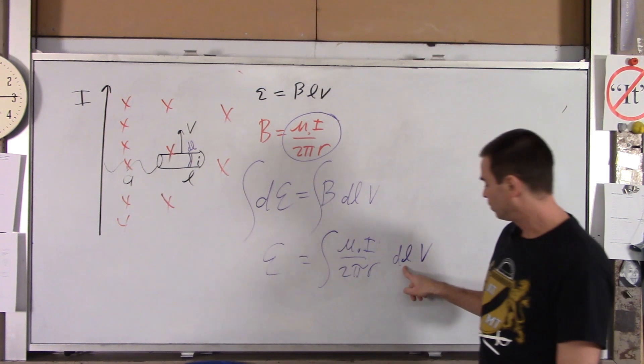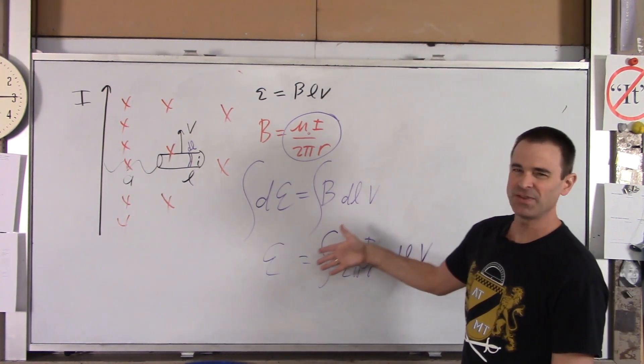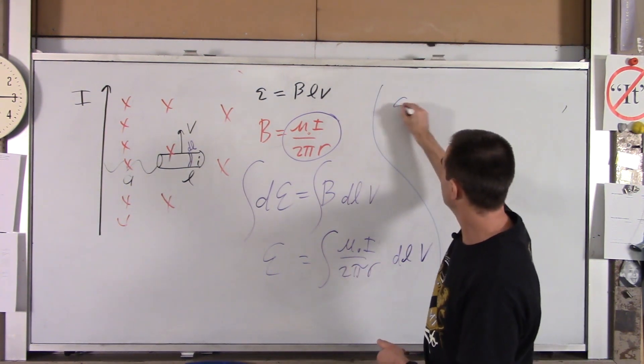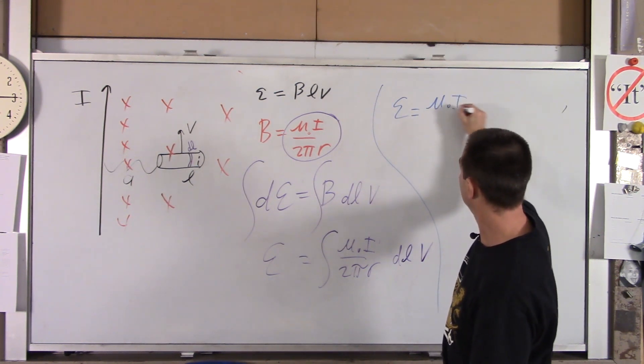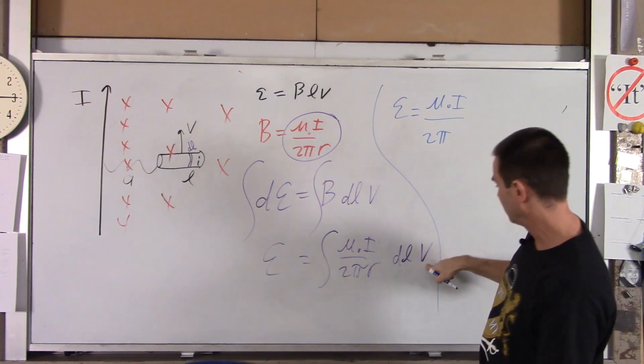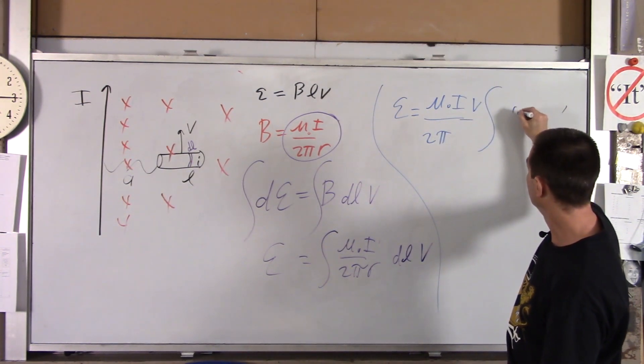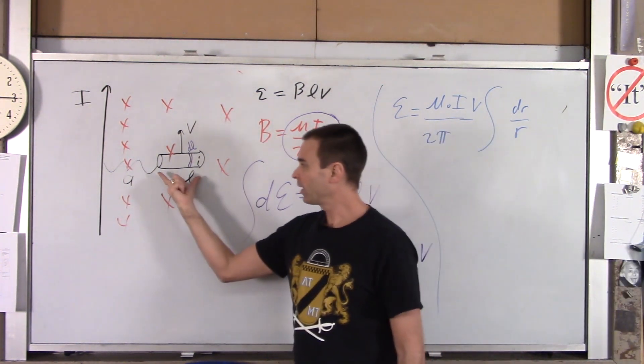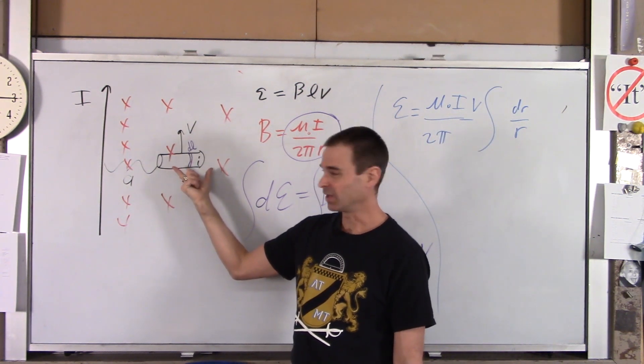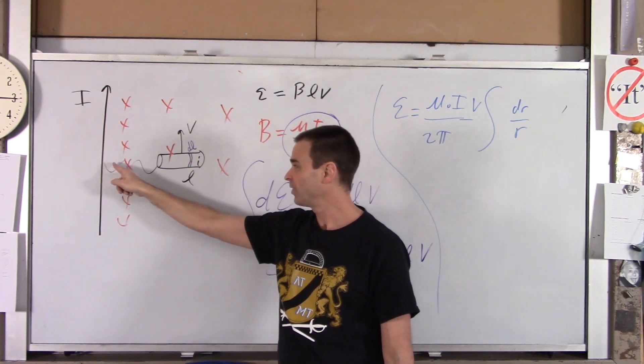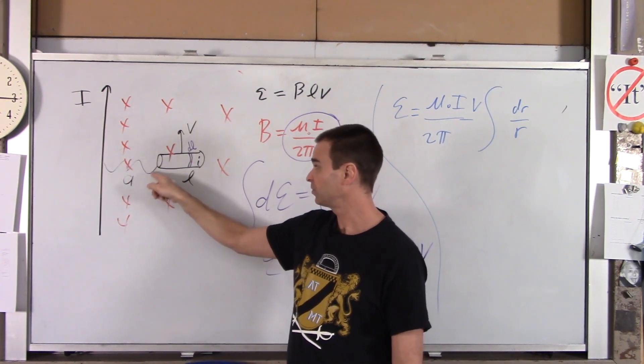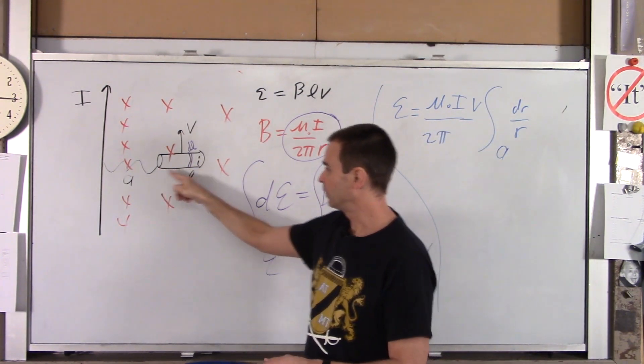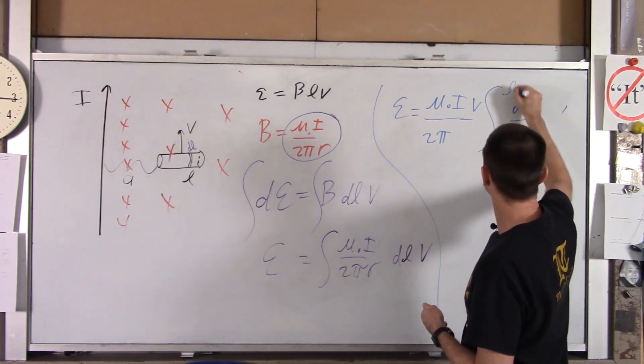So I'm going to make that substitution here. So I'm going to have a dR here. I'm going to have R there. Everything else is constant. So I'm going to drag everything else out of the integral. So EMF is mu naught is constant, I is constant, 2 pi is constant, and here our V is constant. And all we're integrating is dR over R. The last thing you got to do is put the right limits in here. Where does this chunk of metal exist relative to this wire? Well, I start working my way this way. The chunk of wire or chunk of metal starts A away. And the chunk of wire ends over here, which is L plus A away.